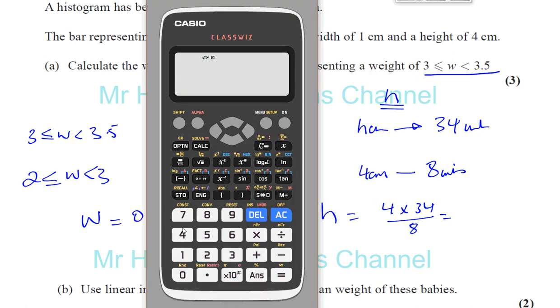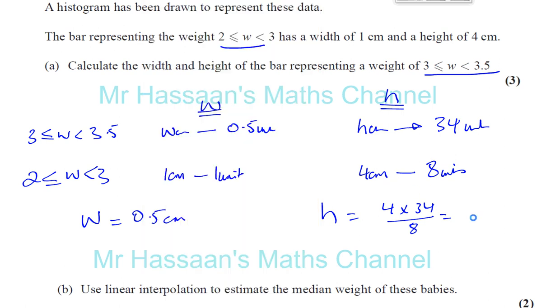So let's just calculate what that gives us. So 4 multiplied by 34 divided by 8, and that gives us 17. So the height is 17 centimeters. So those are the answers for part A of this question, and I'm going to go on to part B in a minute.